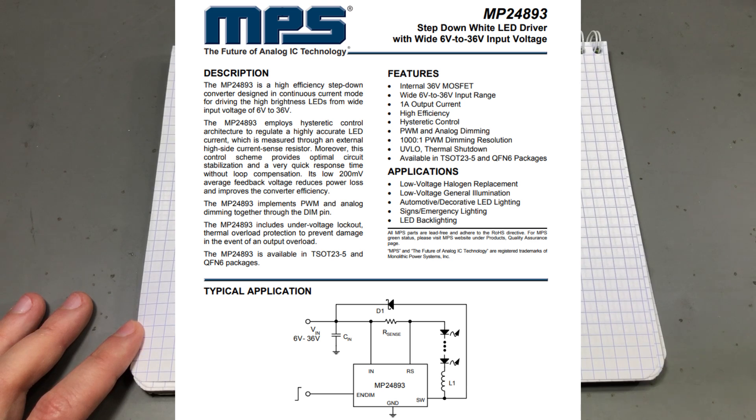Here is one example of such a circuit the MP24893 which is a switch mode step down constant current power supply circuit designed for driving LEDs in series. We can see it takes a rather high input voltage of up to 36V so it can accommodate a large number of LEDs in series and then it can drive them up to 1A.